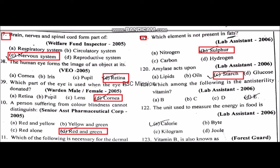Which vitamin is the anti-sterility vitamin? Vitamin E is the anti-sterility vitamin. The unit used to measure energy in food.